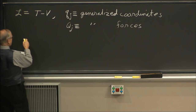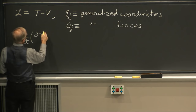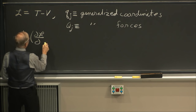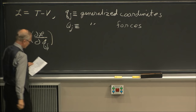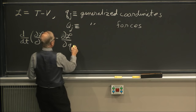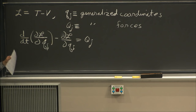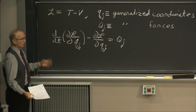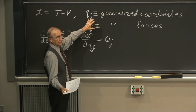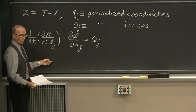The Lagrange equation says that d/dt of the partial of L with respect to q_j-dot — the velocities — minus the partial derivative of L with respect to the generalized displacements equals the generalized forces. For a typical system with three degrees of freedom, you need three equations of motion, and the j index goes from one to three. You do this calculation for coordinate one, again for coordinate two, again for coordinate three, and you get three equations of motion.